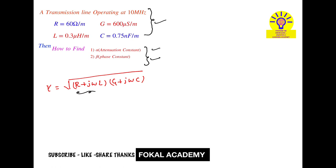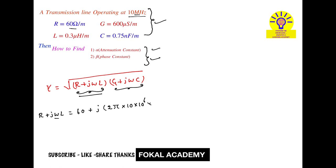Here R + jωL is called the series impedance, and G + jωC is the shunt admittance. First, convert the series impedance into polar form. R + jωL: R is given as 60 ohms, so 60 + j times omega, which is 2π times f — the operating frequency 10 MHz, that is 10 × 10⁶ — times L, which is 0.3 microhenry, that is 0.3 × 10⁻⁶.